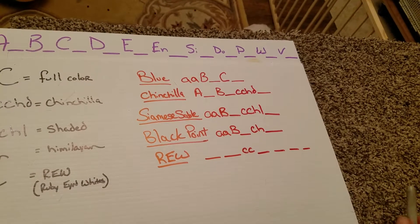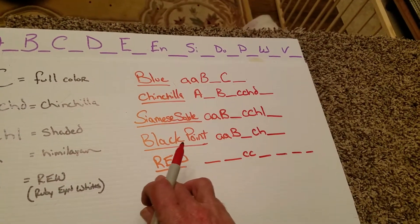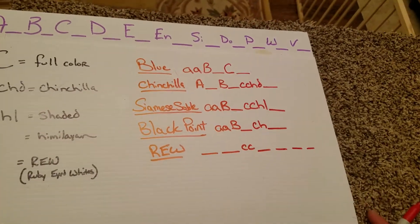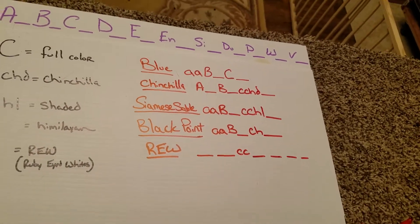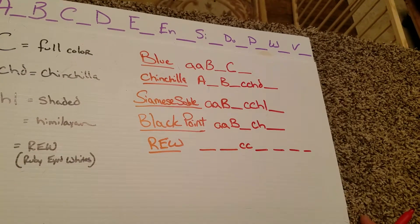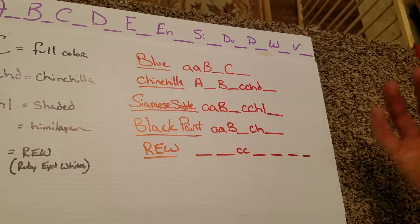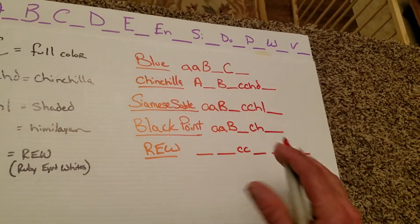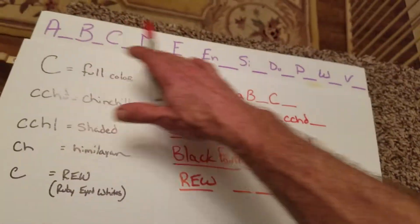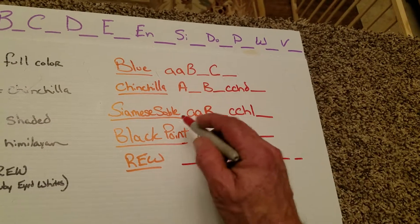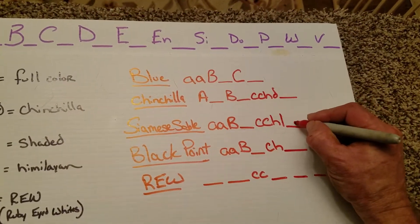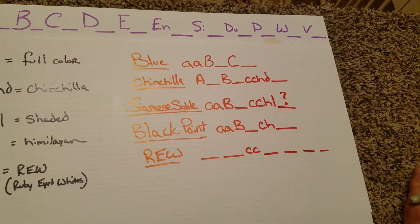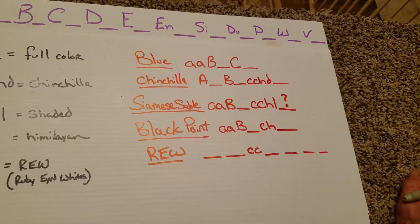But the main point I'd like to say is that ruby-eyed white makes a really awesome test breeding candidate. For instance, we're just going to talk about the C locus right now, not about what happens everywhere else. Let's say that we wanted to find out what was hiding within our Siamese sable.